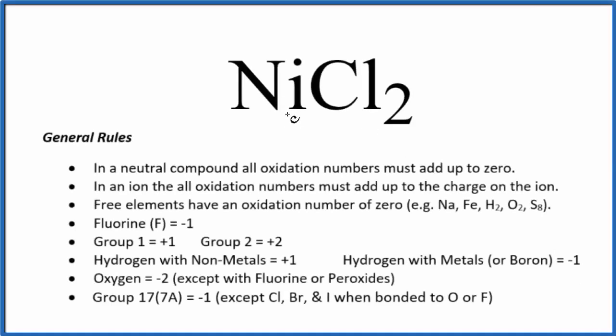To find the oxidation number on each element here in NiCl2, we'll use these rules. Since there's no negative or positive after the nickel chloride, that means it's a neutral compound. And all the oxidation numbers are going to add up to zero.